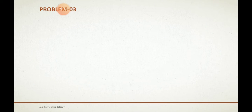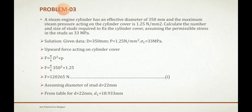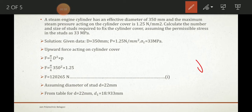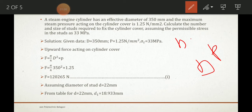Let us get started. The problem: a steam engine cylinder has an effective diameter D of 350 mm. The maximum steam pressure acting on the cylinder cover is 1.25 N/mm². We have to calculate the number n and the size (diameter) of the studs required, assuming the permissible tensile stress in the studs is 33 MPa.